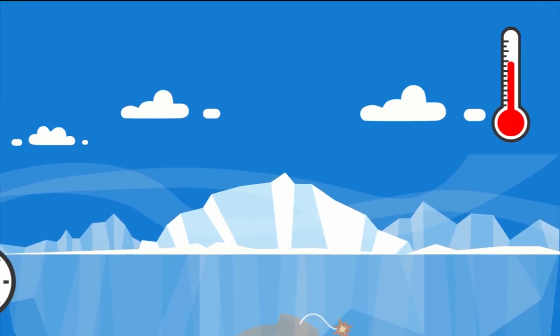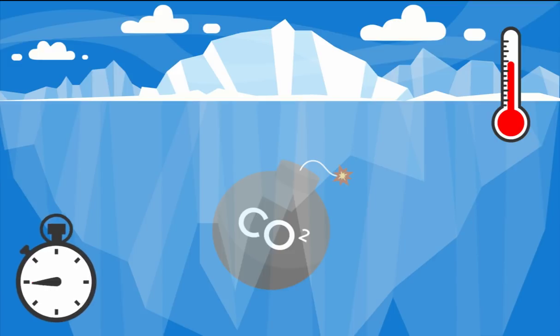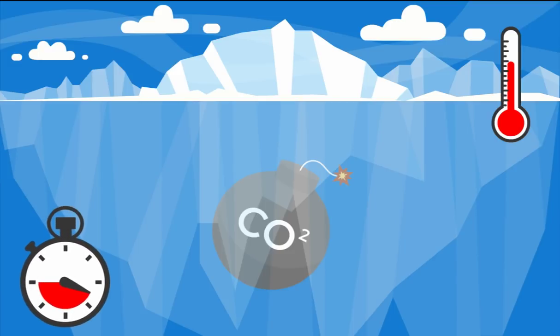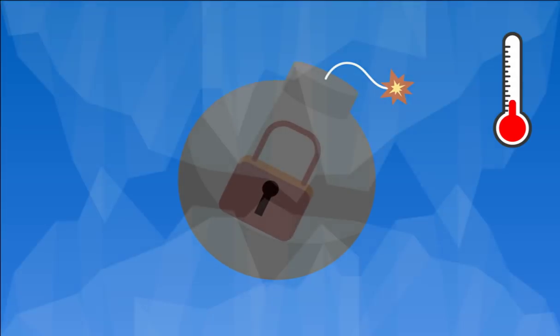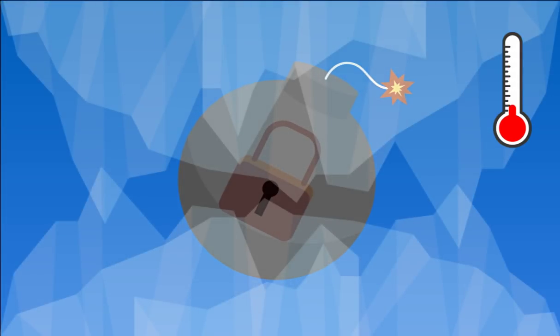Trapped beneath the permafrost is a ticking timebomb. More carbon dioxide than if we burned all of the world's forests three times over. As the world warms, we are getting closer to melting the permafrost. This cooling of frozen soil will keep carbon dioxide locked in.